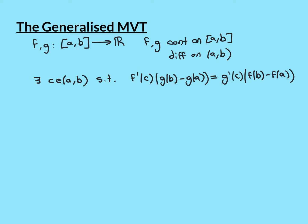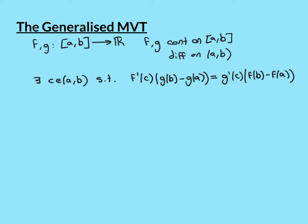Then the Generalized Mean Value Theorem says that there exists a number c within the open interval (a, b), so properly between a and b, such that the following statement is true: the derivative of f evaluated at c, times the difference g(b) minus g(a), is equal to the derivative of g evaluated at c, times the difference f(b) minus f(a).